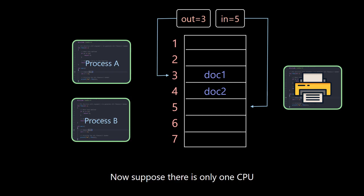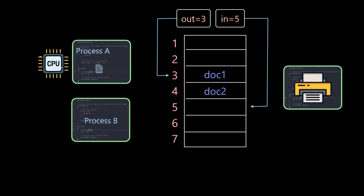Now suppose there is only one CPU, so the two processes should be run alternately. Suppose that process A is now running. At this time, if process A wants to print a document, it needs to put it at the end of the current print queue.